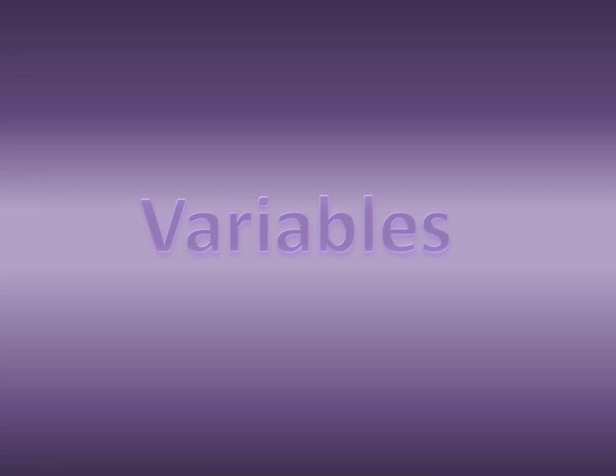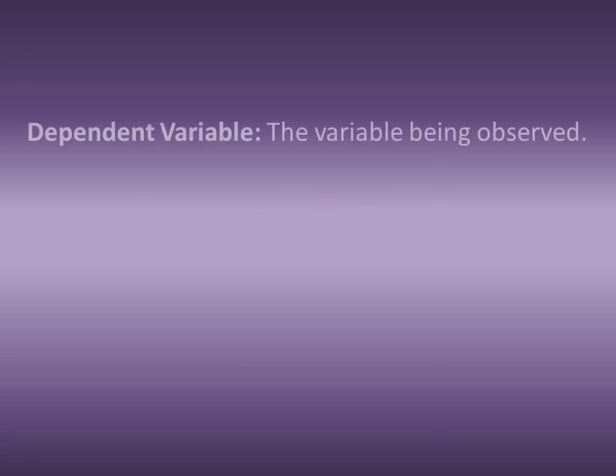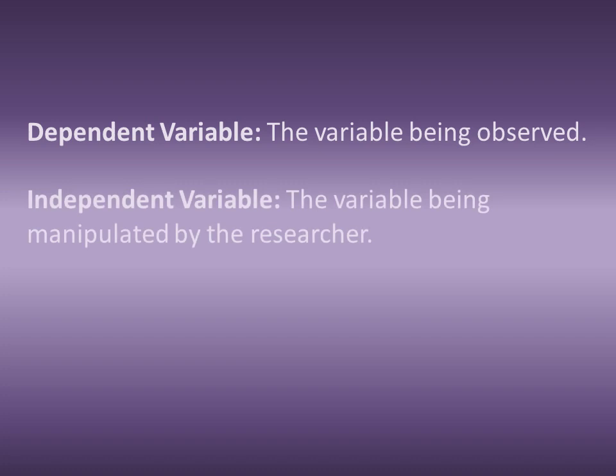Hi all, today I'm going to be talking to you about variables — the variables you would be looking at in a scientific experiment. There are two types of variables: dependent variables, which is the variable being observed — that's the variable you are interested in as a researcher, the one that you're measuring, the one that you're keeping close count of. Then you have the independent variable, which is the variable that is being manipulated in the experiment.